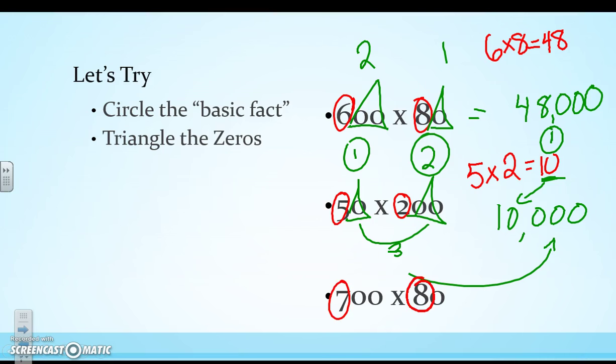All right, and then let's try this next one. We have 700 times 80. 7 times 8 is the basic fact, which is 56. And then I have one, two, three 0s. So in my final answer, I will have three 0s from my original factors and add on that 56. So 700 times 80 is 56,000.